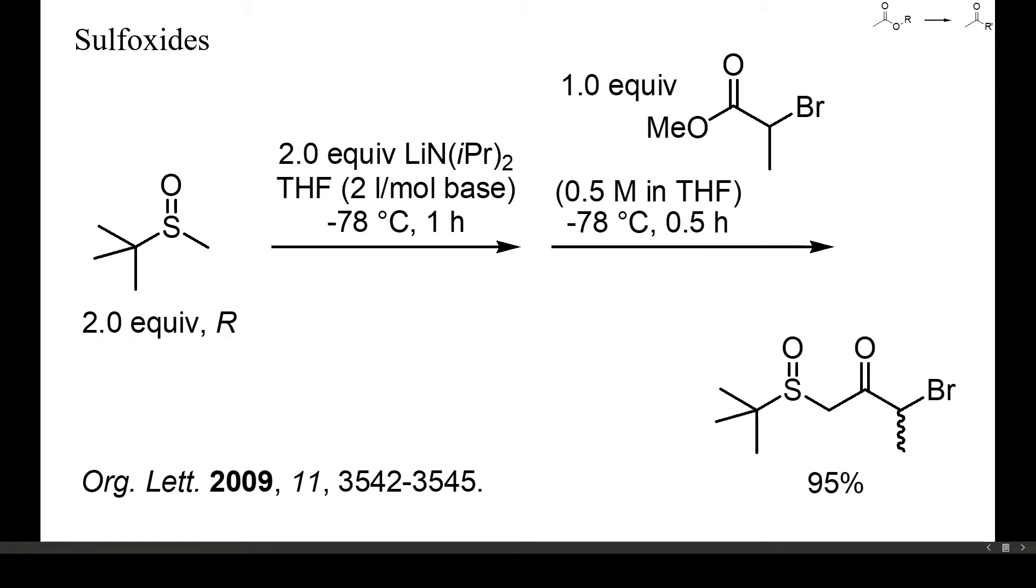Also sulfoxides and sulfones can be metalated stoichiometrically by strong bases and then condensed with carboxylic esters. In this example, methyl bromopropionate was converted into a ketone by treatment with an excess of lithiated sulfoxide.